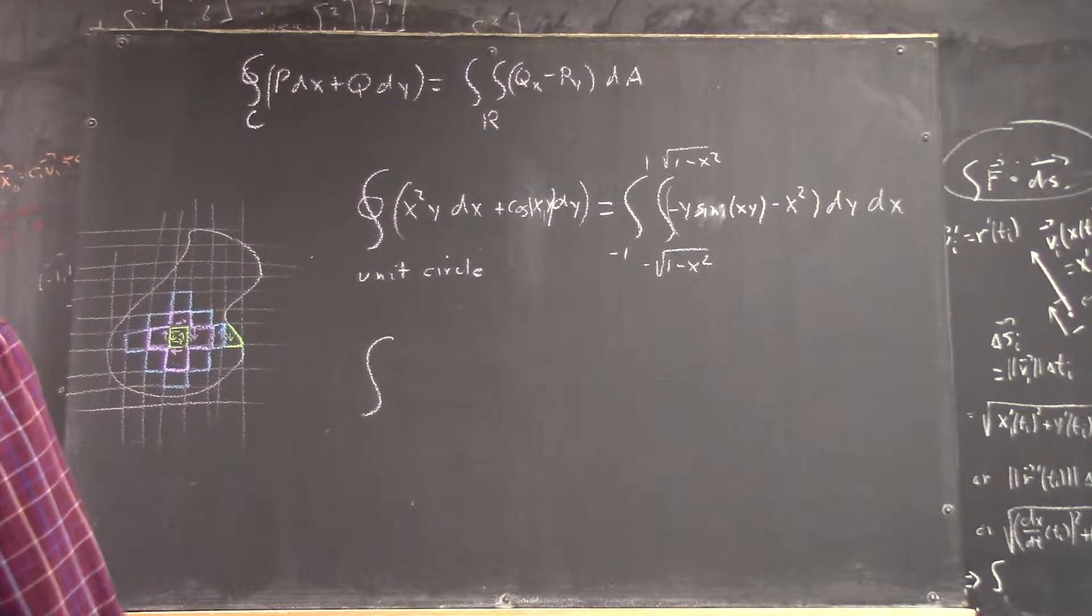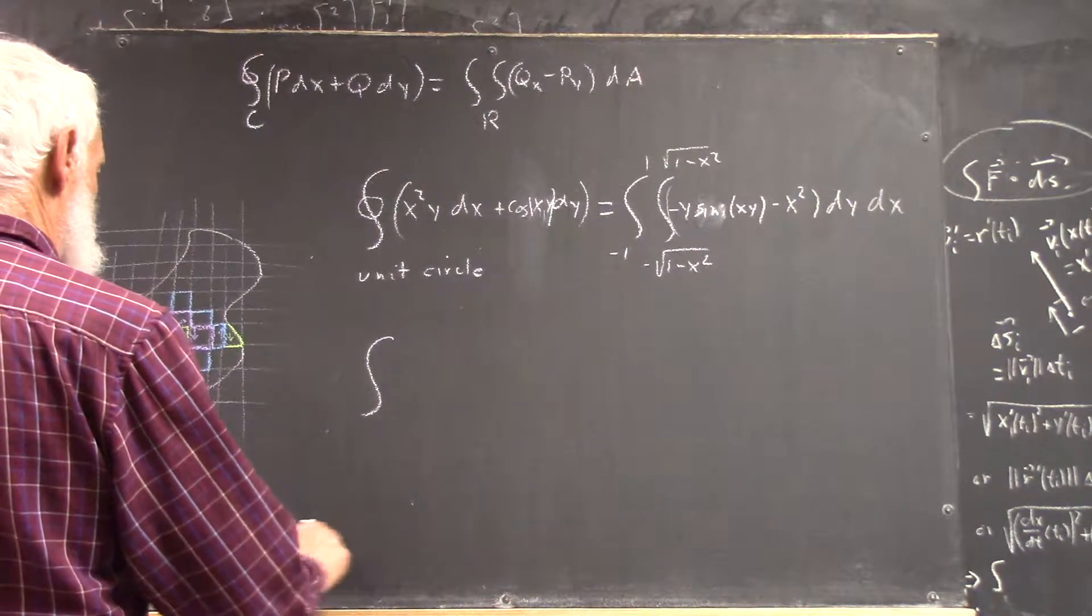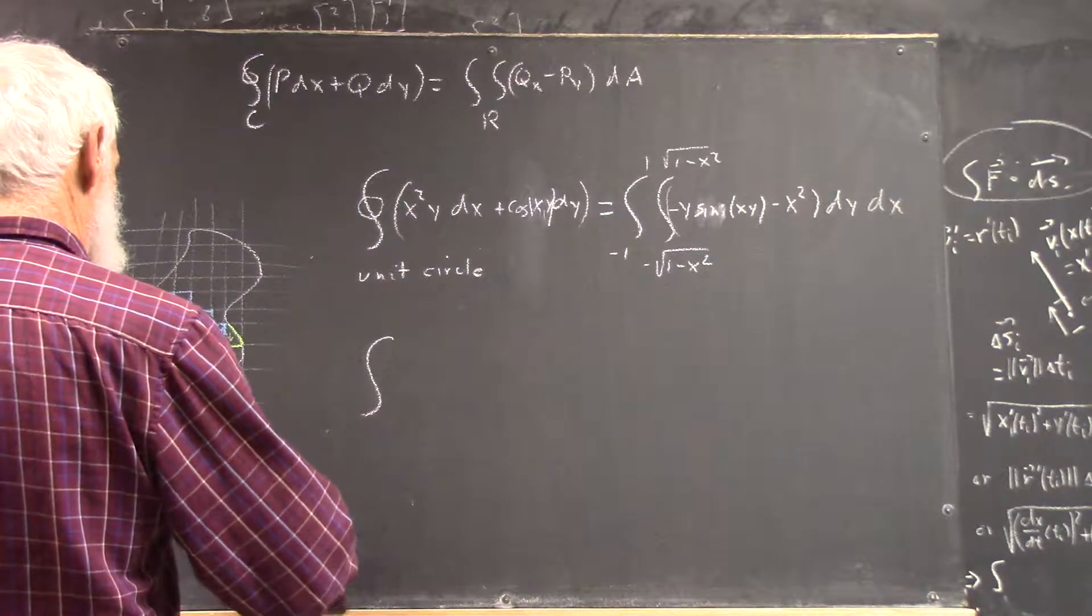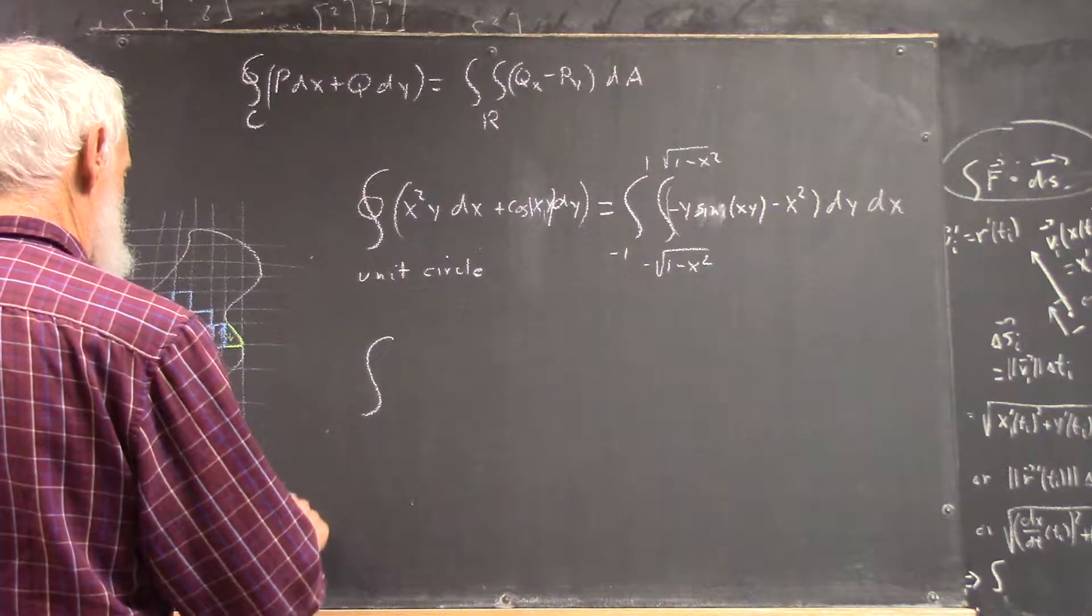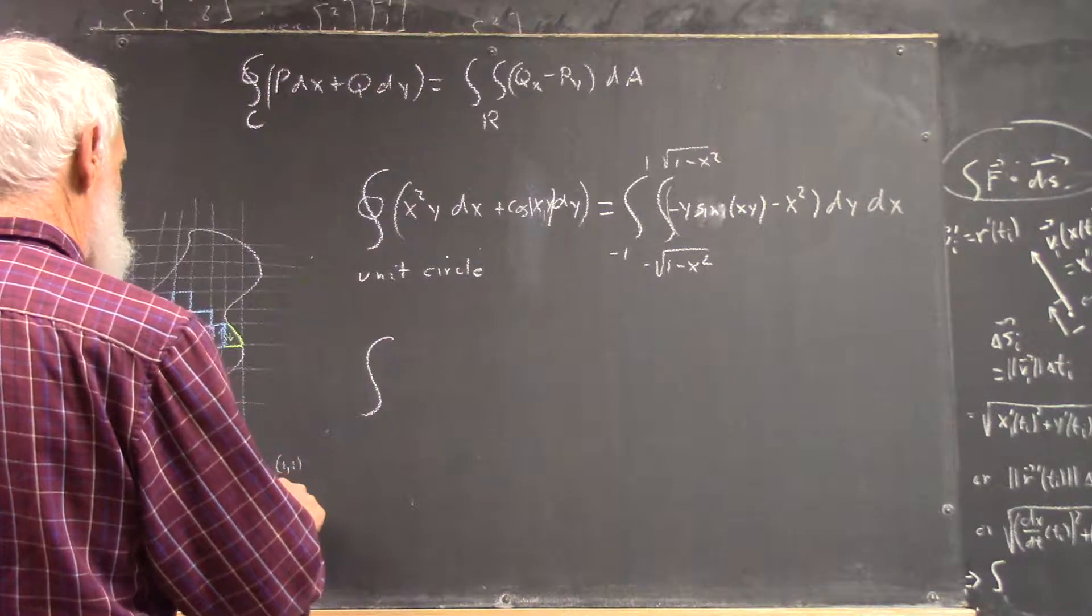So, the one you've chosen, your region is bounded by x and square root of x, which means it looks like this. And here's the point (1,1).